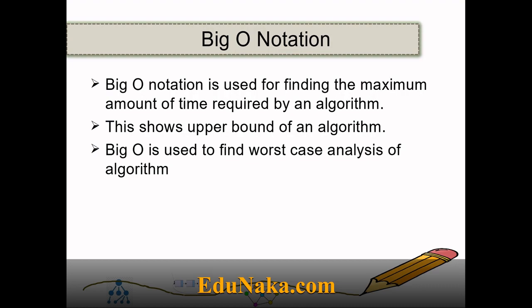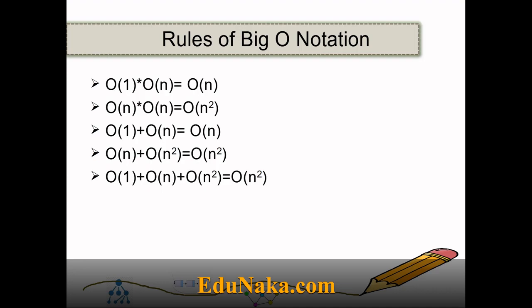Big O notation is used for finding the maximum amount of time required by an algorithm — it shows an upper bound and is used for worst-case analysis. Here are some rules of Big O notation to remember: when multiplying O(1) with anything such as O(n) or O(n²), O(1) is neglected and we consider only O(n) or O(n²). O(n) multiplied by O(n) gives O(n²). When adding O(1) to any other order, it gives that same order — O(1) + O(n) = O(n). O(n) + O(n²) yields O(n²), as the smaller term is neglected. This is consistent with the earlier example.